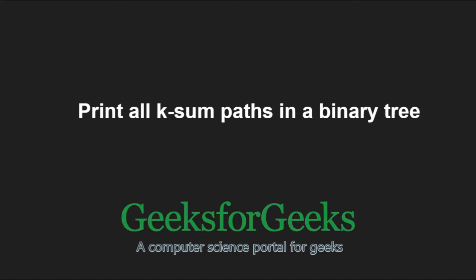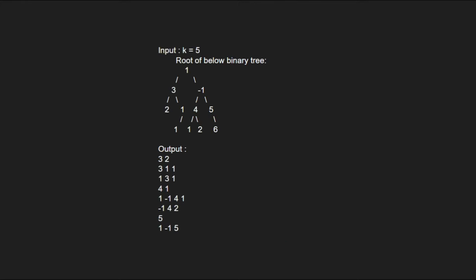First, let us take an example. For the input tree, if k is equal to 5, the output will be all the paths in the tree which have a sum equal to 5.